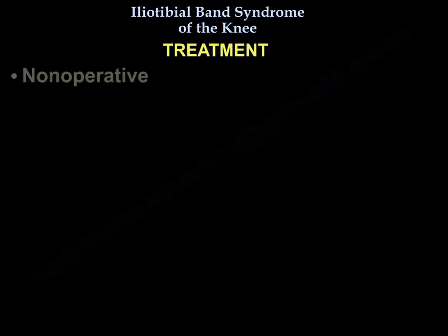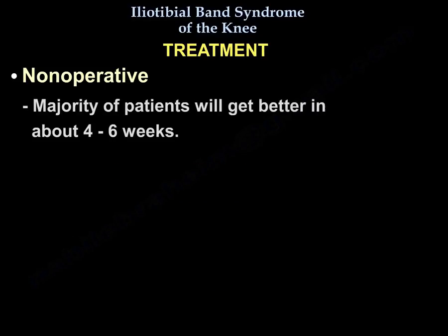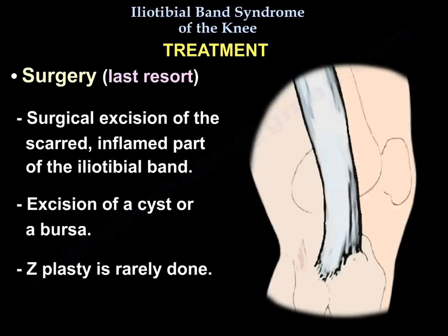Treatment is usually non-operative, including rest and ice, physiotherapy which is very important, stretching, proprioception and improvement in neuromuscular coordination, training modification, better shoe wear, and corticosteroid injection, which may be helpful. The majority of patients will improve in about four to eight weeks with non-operative treatment. Surgery is the last resort and may involve surgical excision of the scarred, inflamed part of the Ileotibial band, or excision of a cyst or bursa. Z-plasty is rarely done.